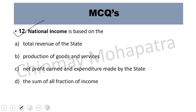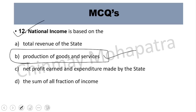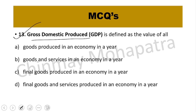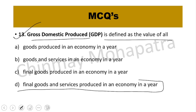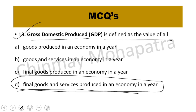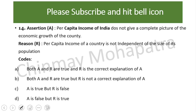Question number twelve: national income of any country is based on the production of goods and services — that is the right answer. Question number thirteen: Gross Domestic Product is defined as the value of all final goods and services produced in an economic year.